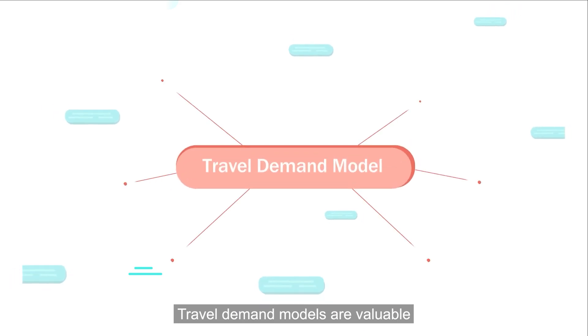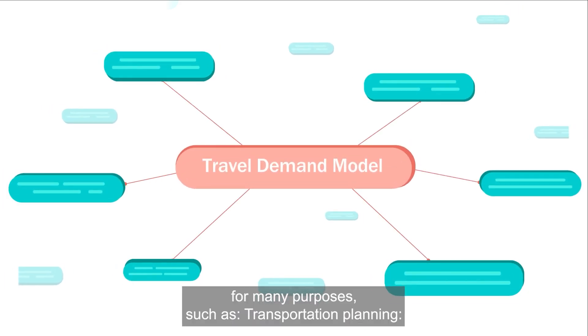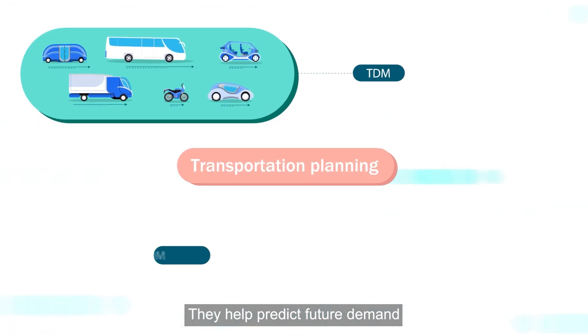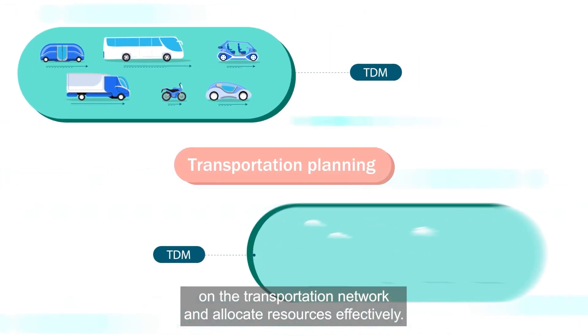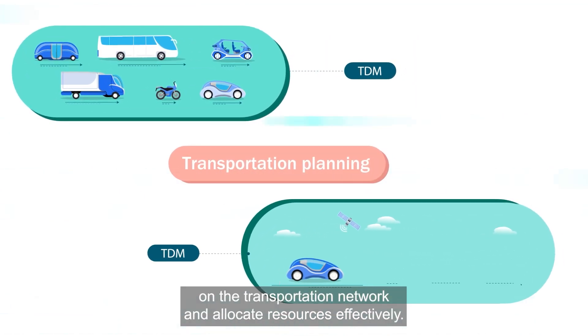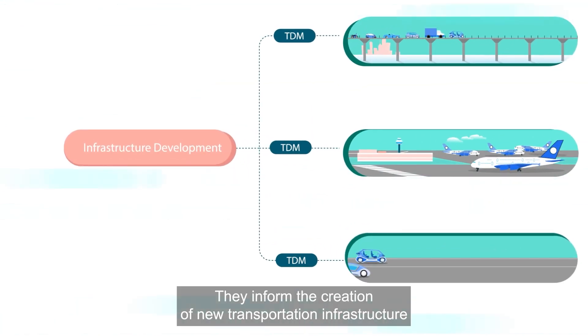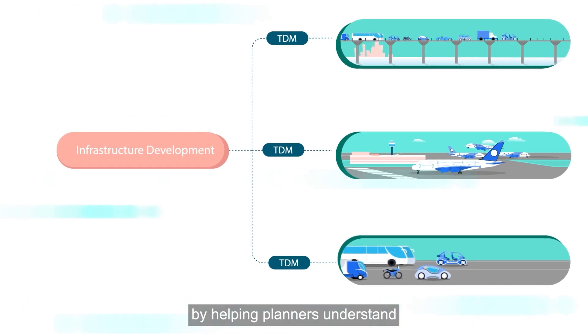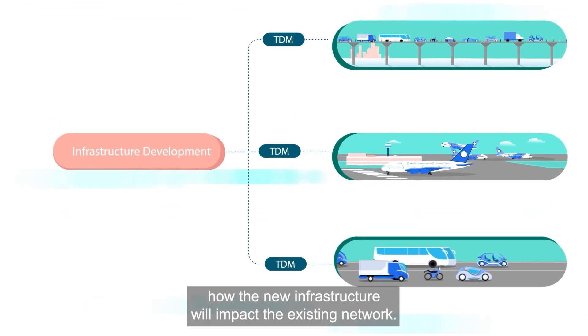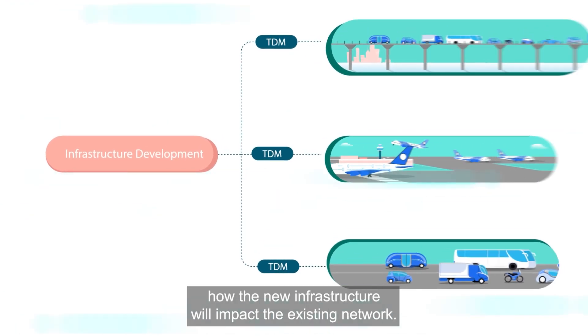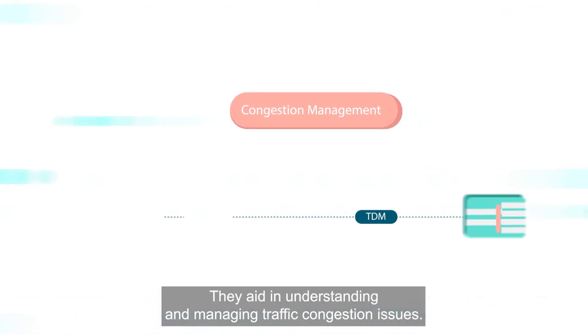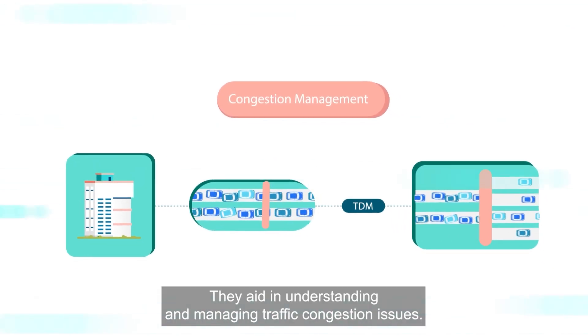Travel demand models are valuable for many purposes, such as transportation planning. They help predict future demand on the transportation network and allocate resources effectively. Infrastructure development: they inform the creation of new transportation infrastructure by helping planners understand how new infrastructure will impact the existing network. Congestion management: they aid in understanding and managing traffic congestion issues.